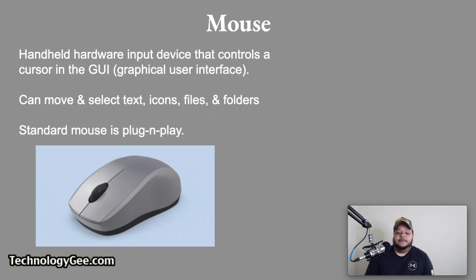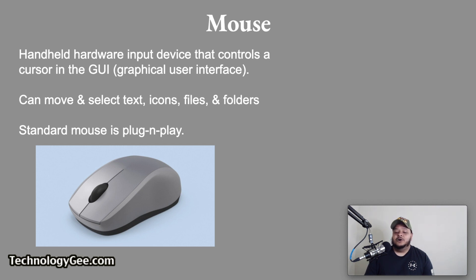Next we have a mouse. A computer mouse is a handheld hardware input device that controls a cursor in the GUI — the graphical user interface — and can move and select text, icons, files, and folders on your computer. A standard mouse is also a plug and play device.